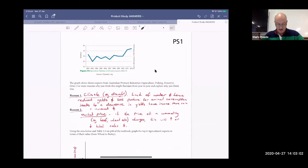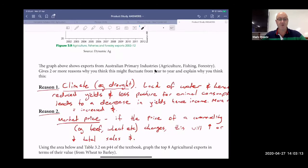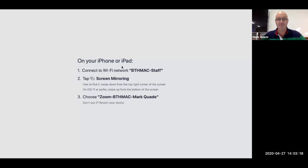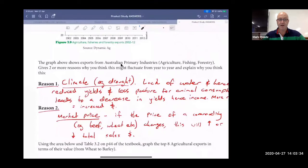So we've got this graph up the top here. Now the graph shows exports from Australian primary industries: ag, fishery, fishing.